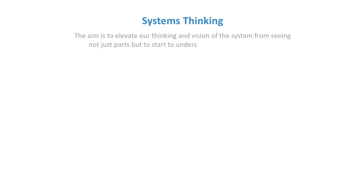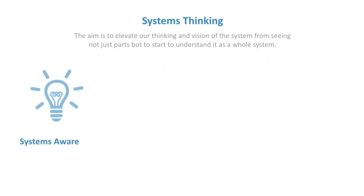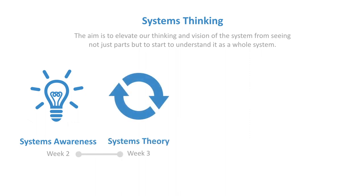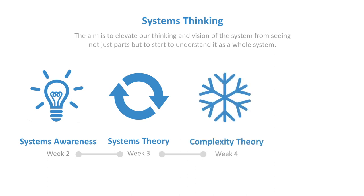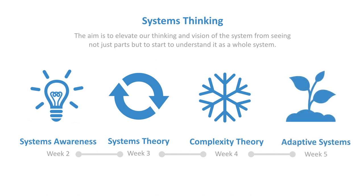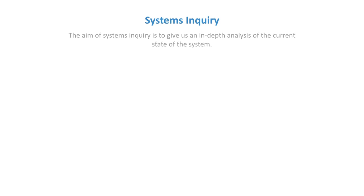Taking a look at that first section: the course starts with an overview to systems innovation, then goes into systems awareness in the second week, thinking about shifting from ego-system thinking to ecosystem thinking. The third week is systems theory and the holistic paradigm, going into complexity theory, network thinking, and complex adaptive systems. That's the first main section — to get us thinking holistically, doing systems thinking, and understanding complexity.